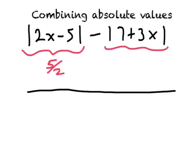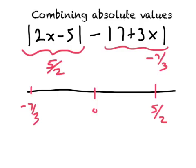Where is the second absolute value equal to zero? We get minus 7 over 3. So five halves is up here somewhere, and minus 7 over 3 is down here. Those are where the two absolute value functions equal zero, and those two numbers divide the real line into three segments.